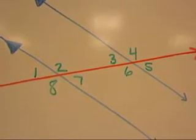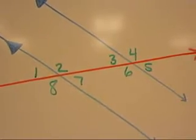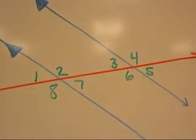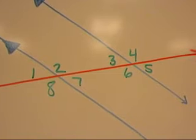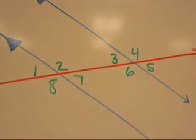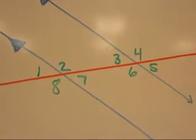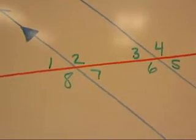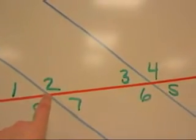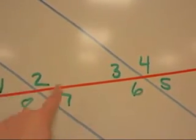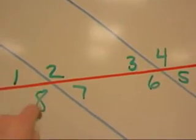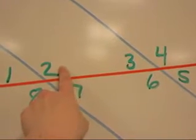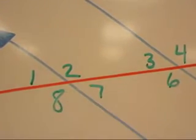Let's number our angles: 1, 2, 3, 4, 5, 6, 7, 8. The first type of special angle we're going to look at are called vertical angles. Vertical angles are always congruent. Vertical angles are angles that share a common center. So I could look at these four angles and talk about vertical angles. 1 and 7 are vertical angles, and 2 and 8 are vertical angles.